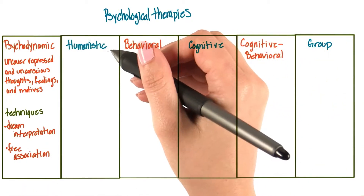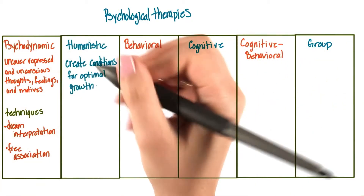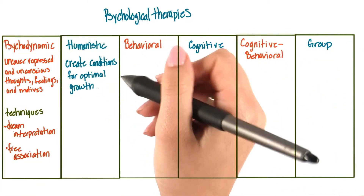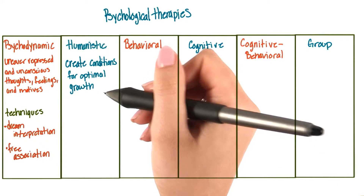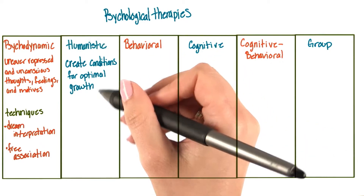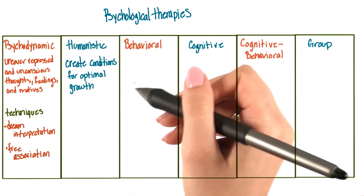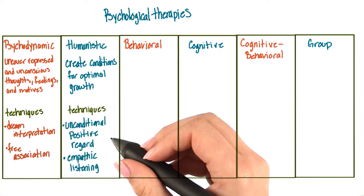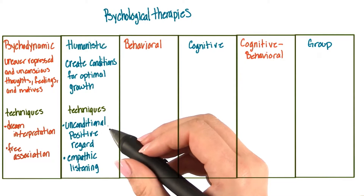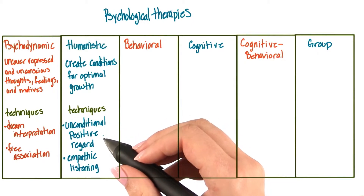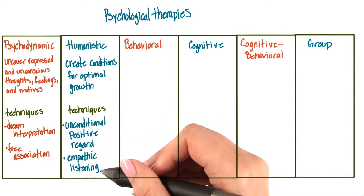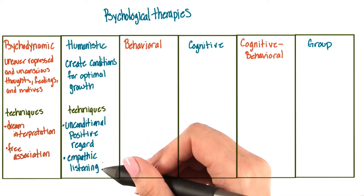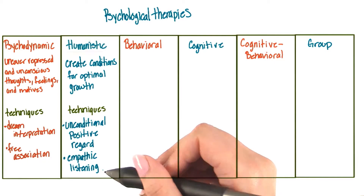Let's move on to humanistic therapies. The goal of humanistic therapy is to create conditions for optimal personal growth. The techniques for humanistic therapy are unconditional positive regard and empathic listening.